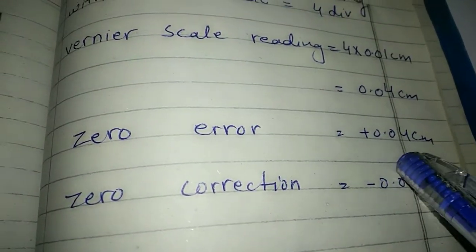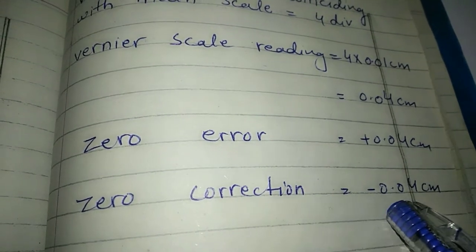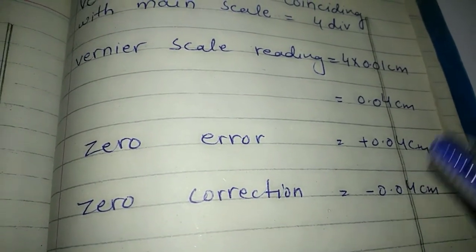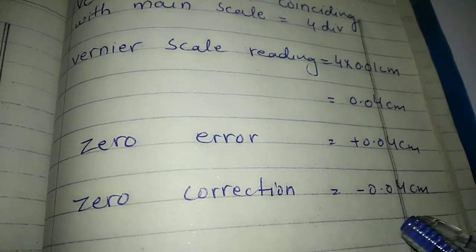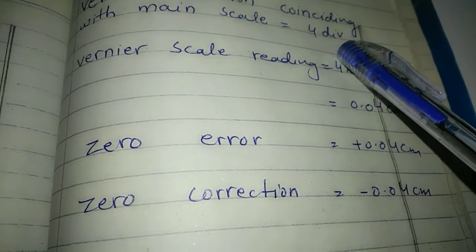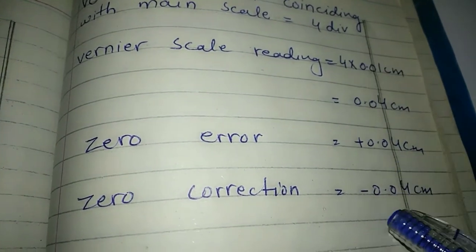Zero correction equals zero error minus the reading. Four divisions is 0.04, so zero correction is negative 0.04 cm, which is the answer.